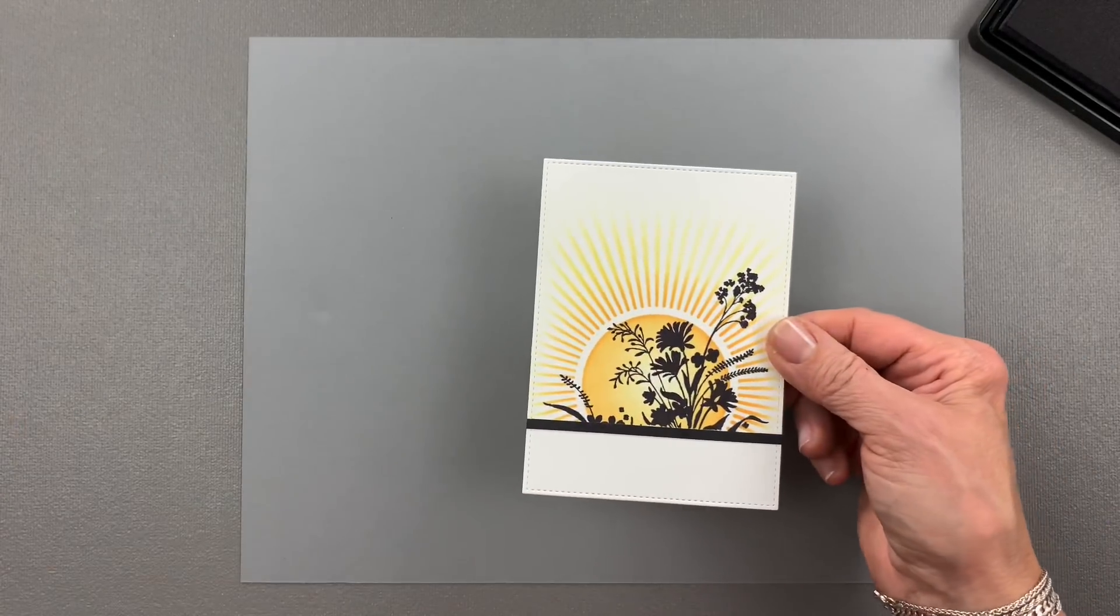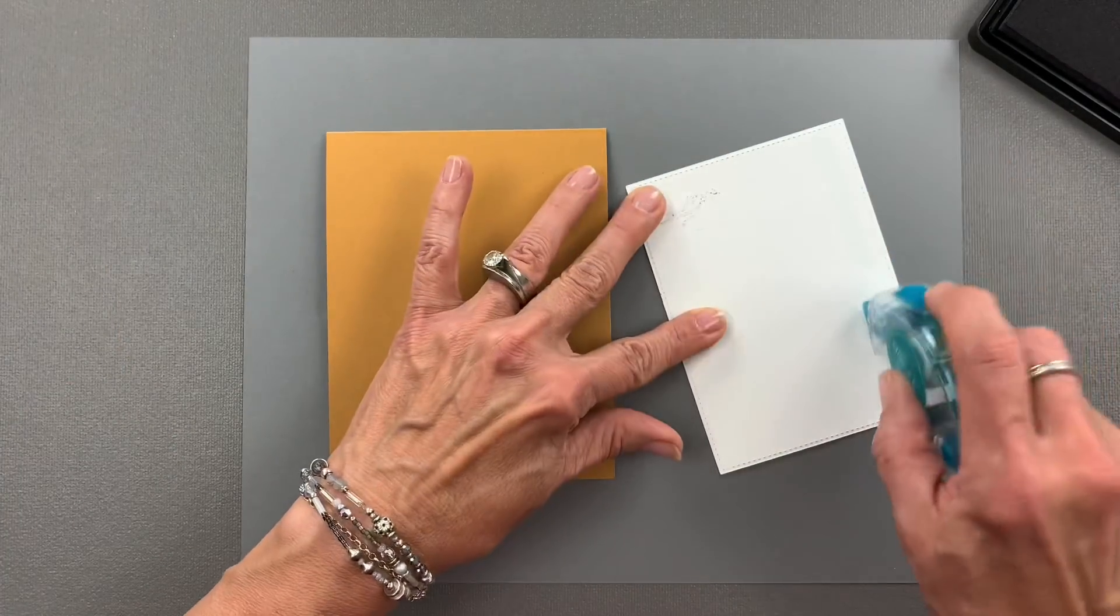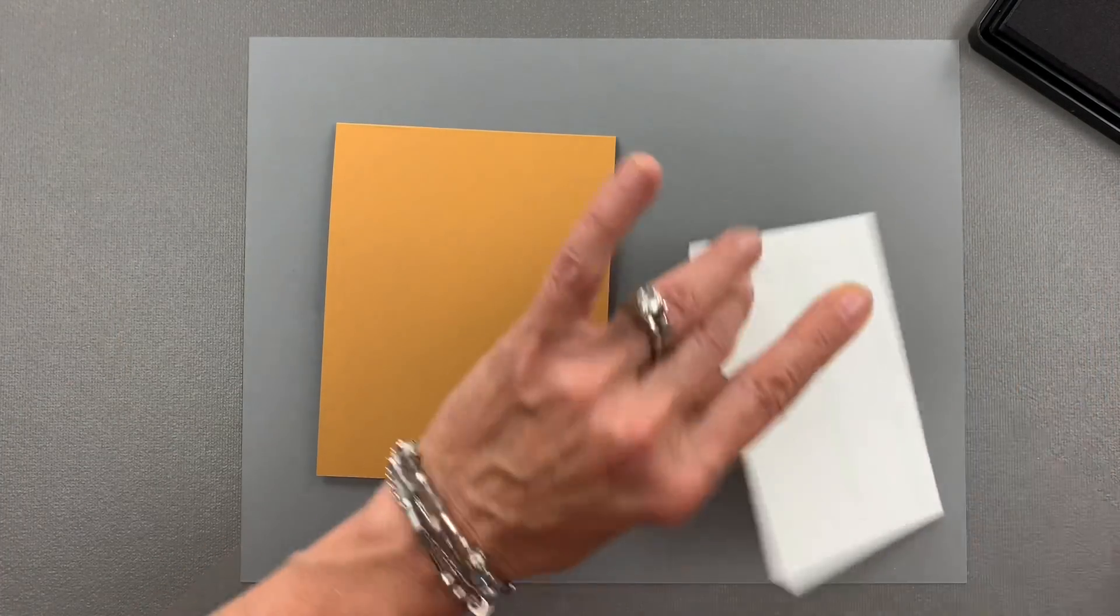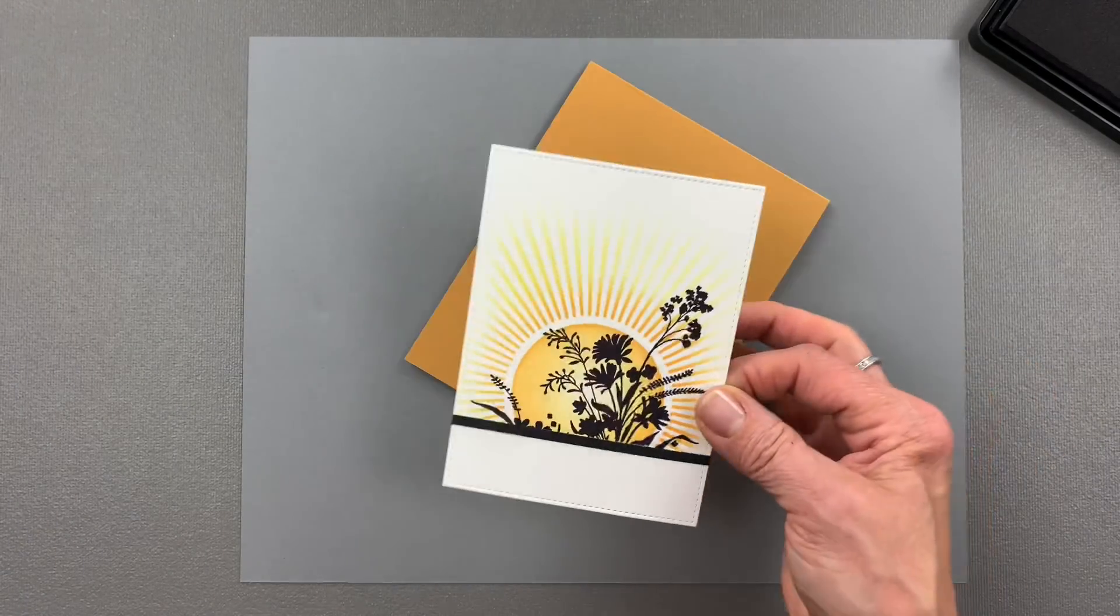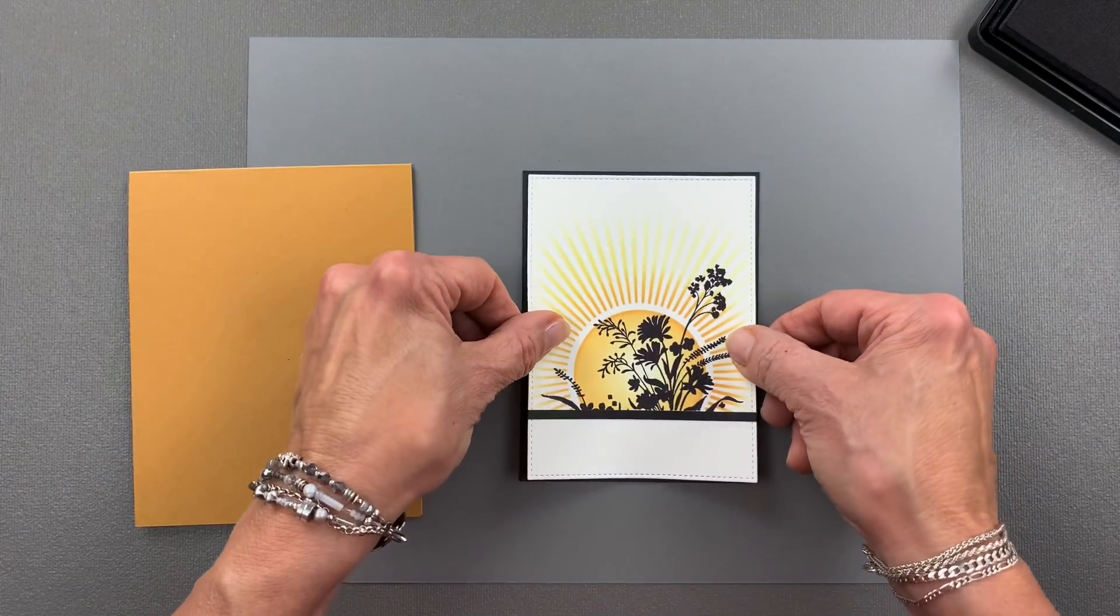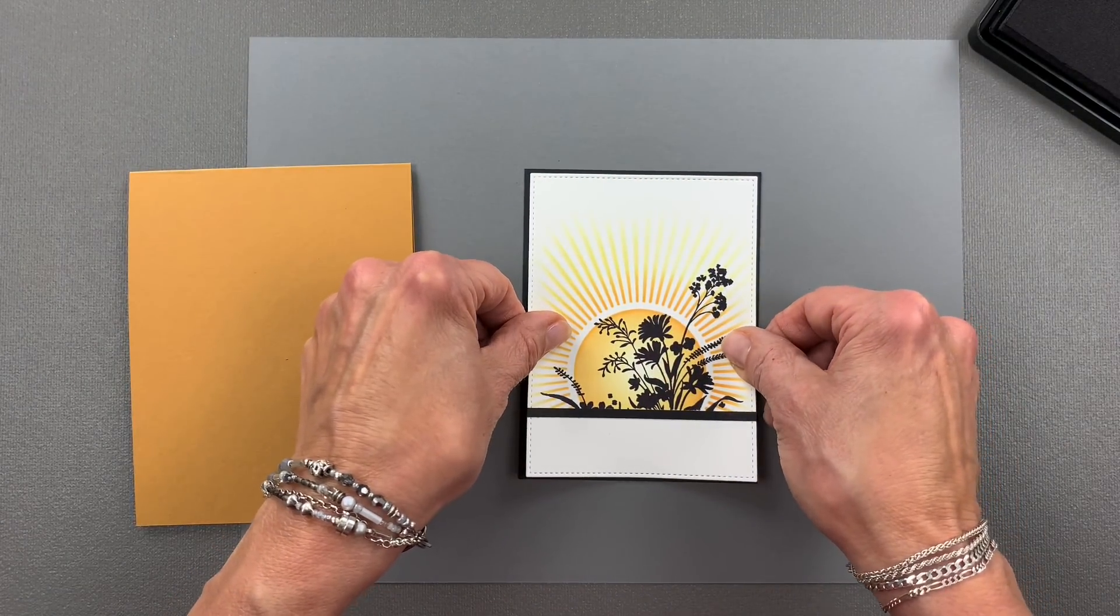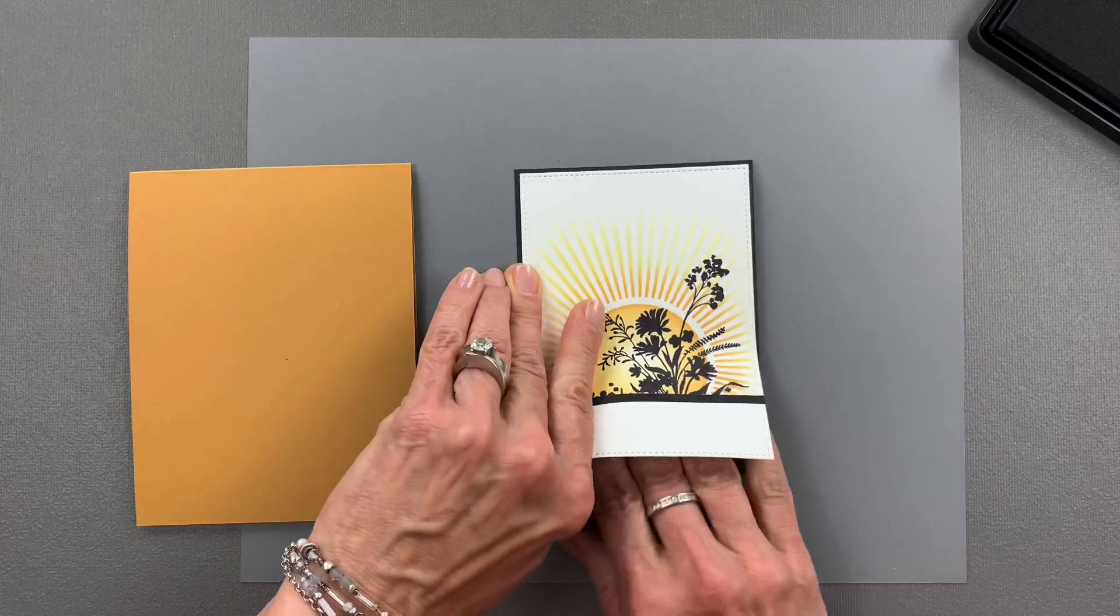This whole panel is going to get adhered to a Honey Mustard card base. Actually, this whole panel is going to get adhered to this black panel that I cut. You guys know me by now. I have to put everything on black. It all has to get outlined really nicely.